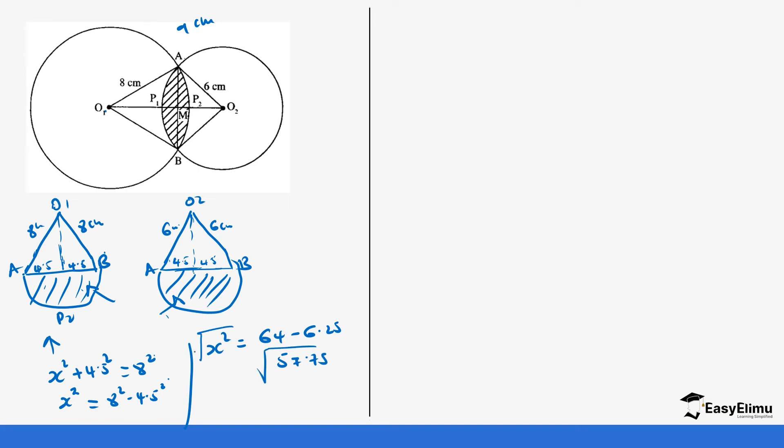So 64 minus 6.25 gives us 57.75. If you do the square root of both sides, you get the value of x as 7.5999, so basically it's going to be 7.6.